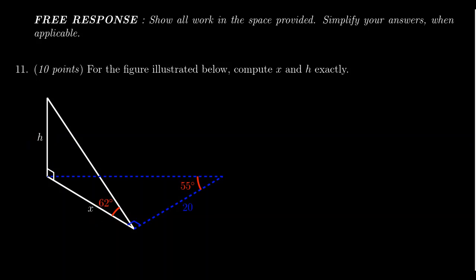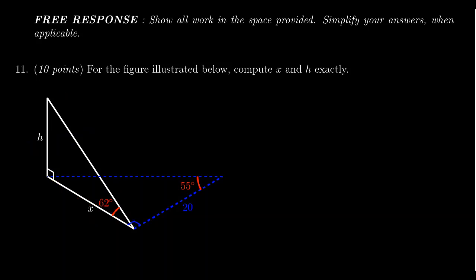There is a white triangle — it's a right triangle with an angle of 62 degrees. Its adjacent side is the unknown X and the opposite side is the unknown H. There's also a blue right triangle.